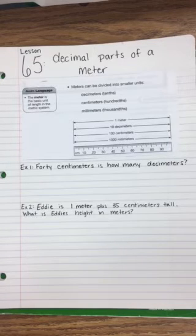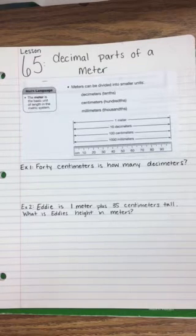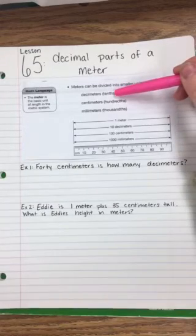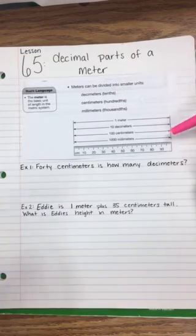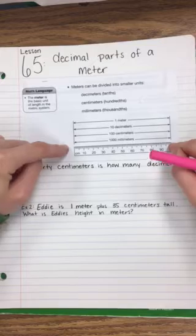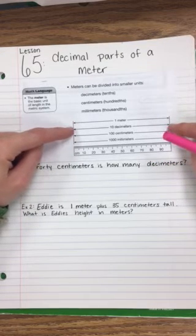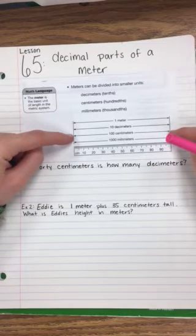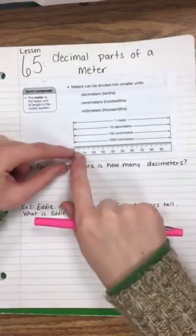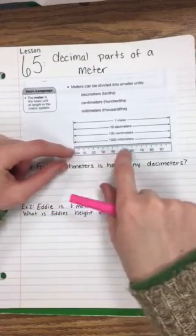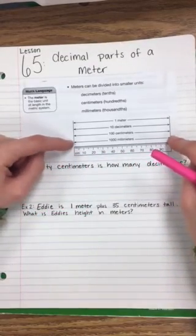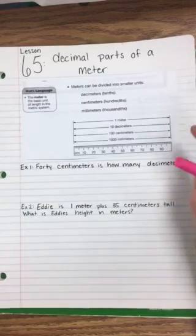Meters may be divided into tenths called decimeters. So this length right here, if this is one meter, it's ten decimeters, it's a hundred centimeters, and it's a thousand millimeters on one meter stick.